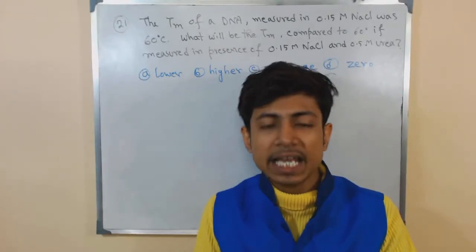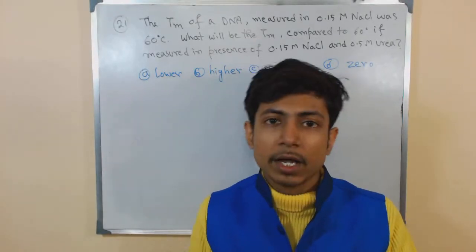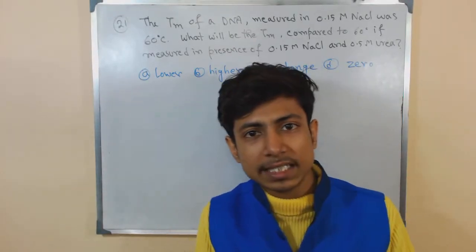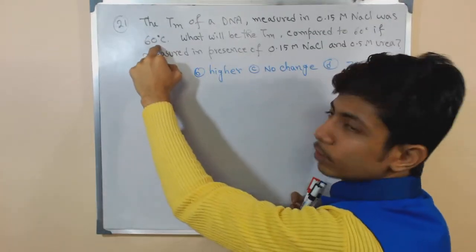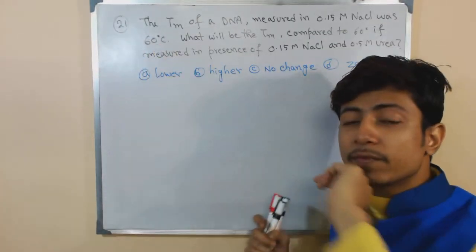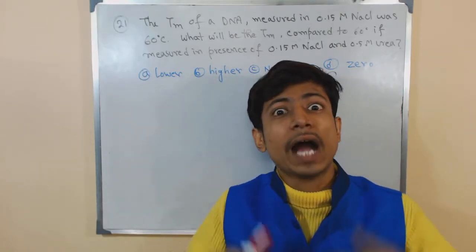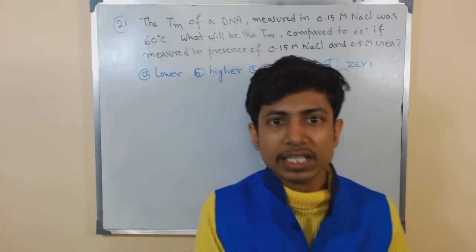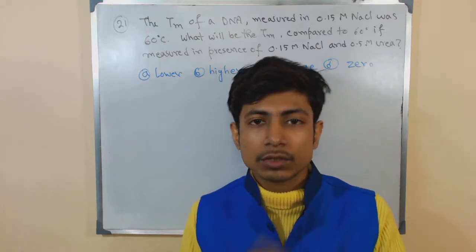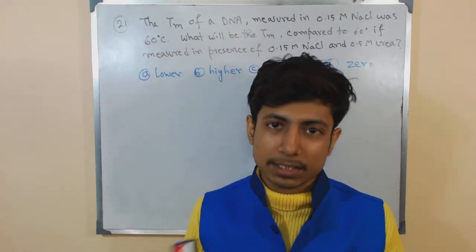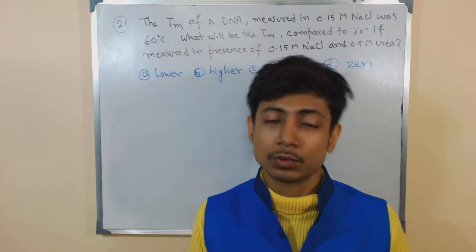It can be caused by NaCl, it can be caused by Urea. If we treat DNA with only NaCl, it gives us the value of Tm 60 degree Celsius. If we do the same thing in presence of sodium chloride as well as urea, the effect will be higher because we are adding two denaturing agents instead of one. So definitely it will take lower temperature to do that.